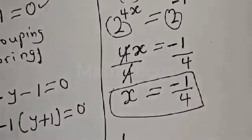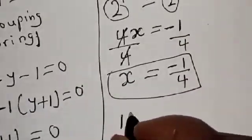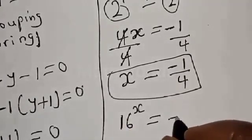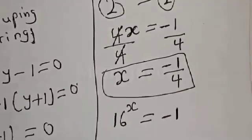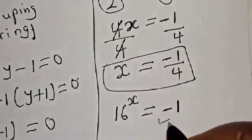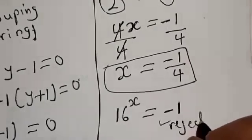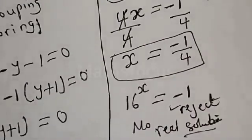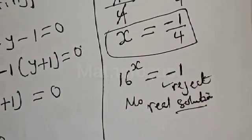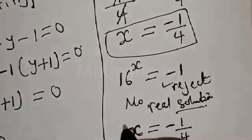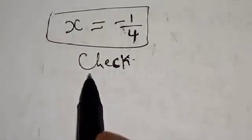For the second case, we have 16 raised to power x equals minus 1. Since 16 raised to any power cannot take a negative value, we reject this and conclude there is no solution from this case. Therefore the only solution is x equals minus 1 over 4.